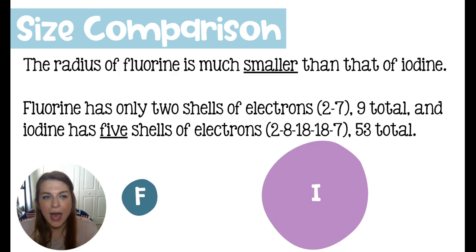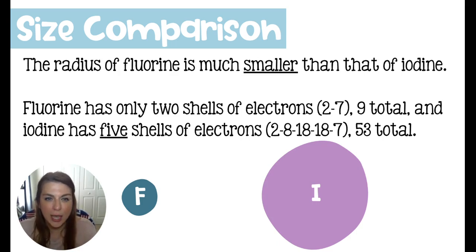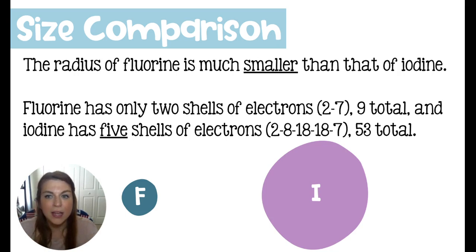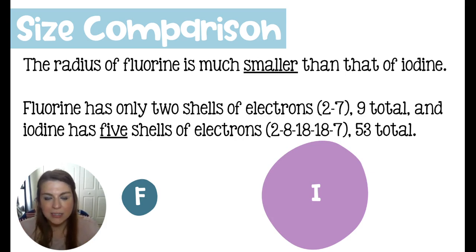Now let's look at the radii of fluorine and iodine specifically, as the smallest and largest of this group. Fluorine has two shells of electrons, organized 2 and 7, giving 9 total. Iodine is much bigger, at the fifth period of the periodic table. It has five layers of electrons: 2, 8, 18, 18, and 7, giving 53 total — and that's just for one atom. So an iodine molecule has 106 total electrons.